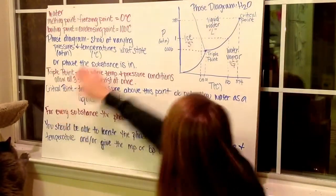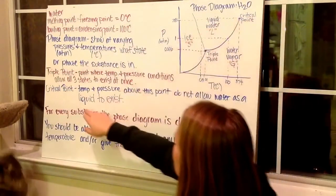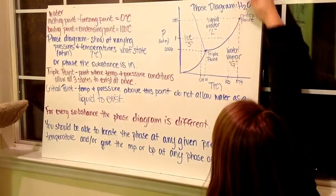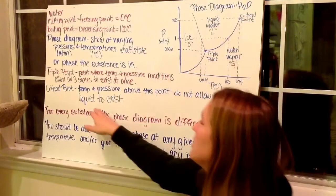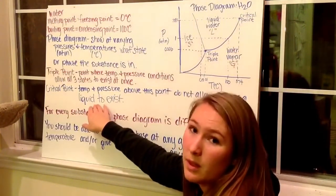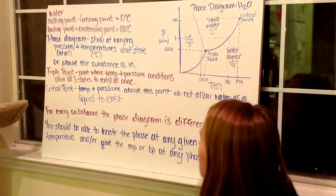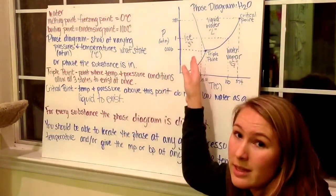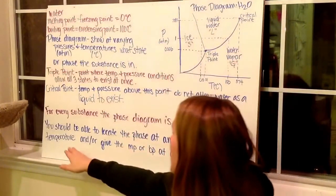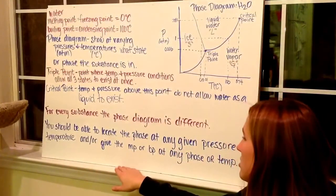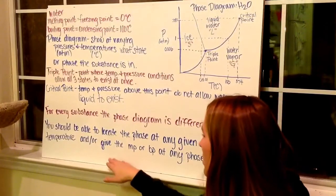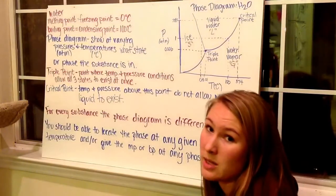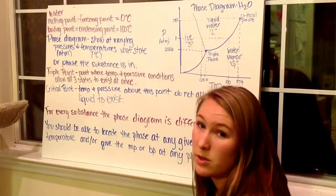Then we have the critical point. This is the point up here. This is where temperature and pressure greater than this point, so anything more to the right and more above this point, do not allow water to exist as a liquid. So it must be a gas after that point. For every substance, a phase diagram is different. They'll have different lines in different locations. And then you should be able to locate the phase at any given pressure and temperature and or give the melting point or boiling point at any phase or temperature.